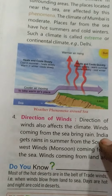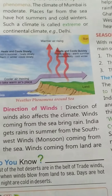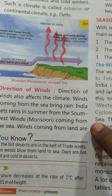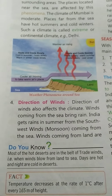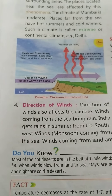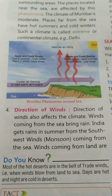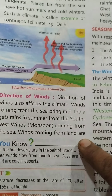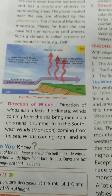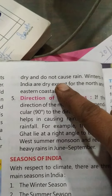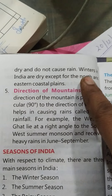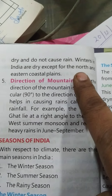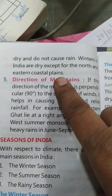The next factor is the direction of the wind. If wind is coming from the sea, it brings rain. Winds coming from the land are dry and do not cause rain. When dry winds blow from the land, it tends to be winter in India, and the northern and extreme coastal plains experience dry conditions.